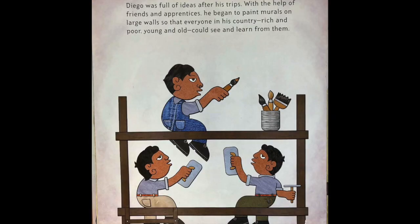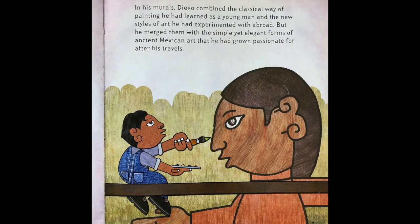Diego was full of ideas after his trips. With the help of his friends and apprentices, he began to paint murals on large walls so that everyone in his country, rich and poor, young and old, could see and learn from them. In his murals, Diego combined the classical way of painting that he had learned as a young man and the new styles of art that he had experimented with abroad, but he merged them with the simple yet elegant forms of ancient Mexican art that he had grown passionate for after his travels.